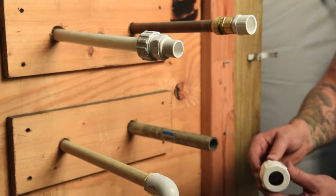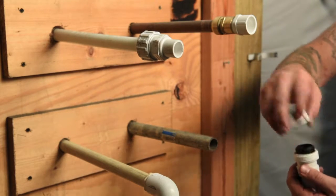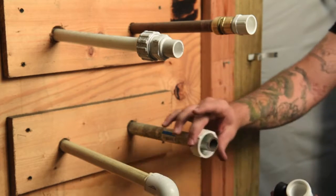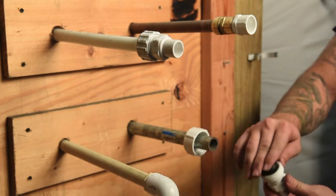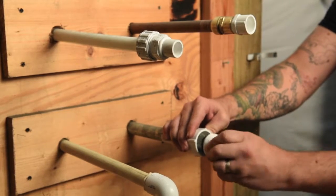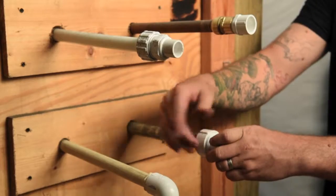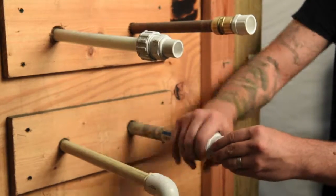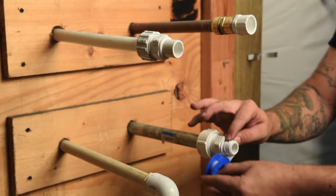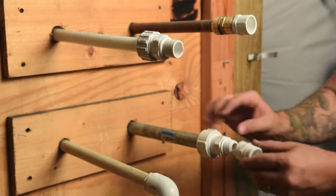Your second option for galvanized is another compression fitting. However this fitting has a compression side for the galvanized, with the other side being a male threaded end. After compressing onto the galvanized, the other side is wrapped in teflon and then either a female threaded 90 or female threaded coupling is placed on to the compression fitting.